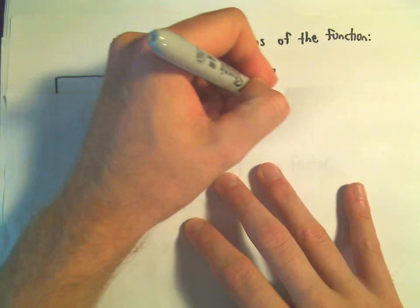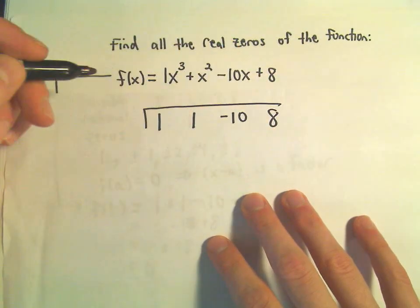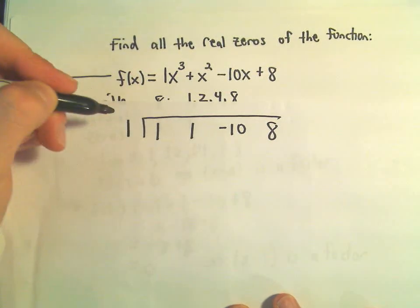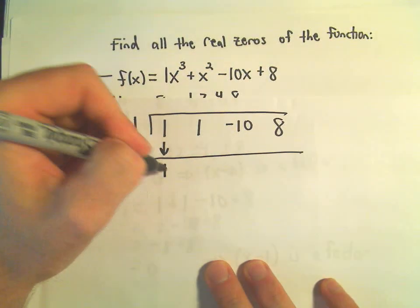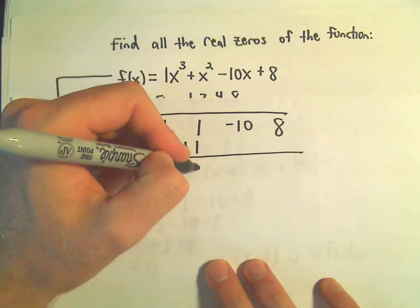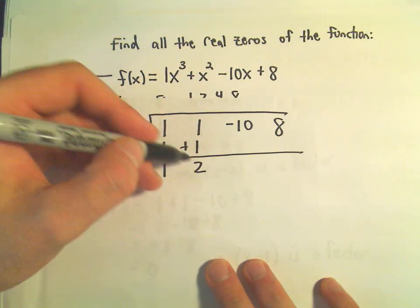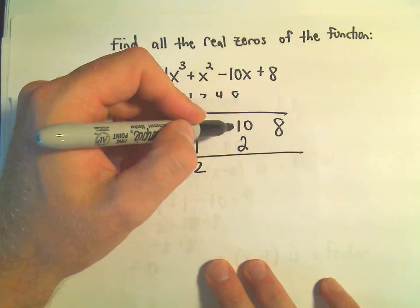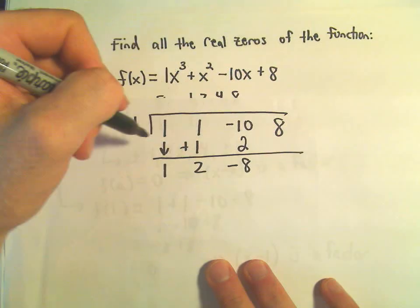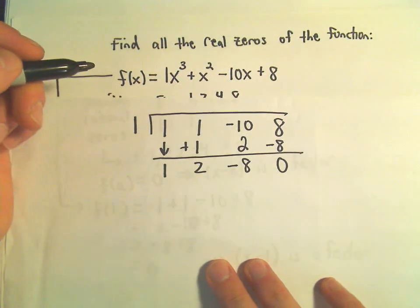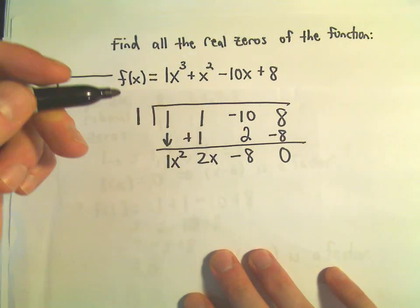Okay, so I'm going to put the coefficients down here: positive 1, positive 1, negative 10, positive 8. We said x minus 1 is a factor, so we're going to use 1 on the outside. And then we drop down our first number, we multiply, 1 times 1 is 1. We add, 1 plus 1 is 2. 1 times 2 is 2. Negative 10 plus 2 is going to be negative 8, and then negative 8 times 1 is negative 8, and if we add, we get our remainder of 0. Since we started with something cubed, this will be our x squared term, our x term, and our constant.